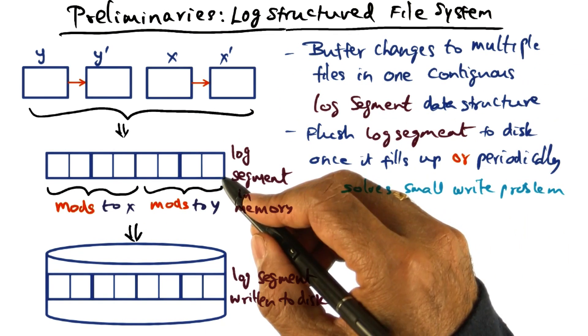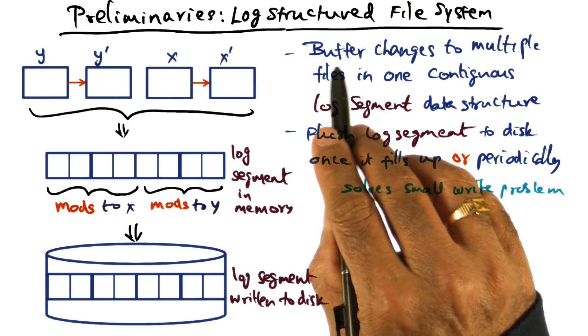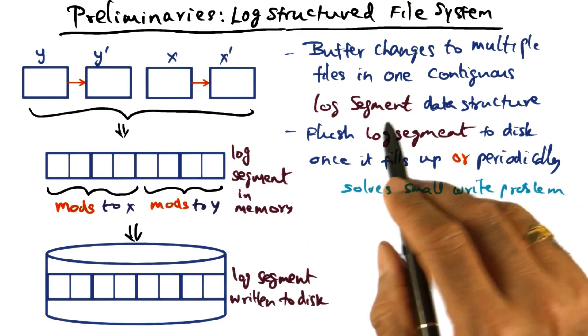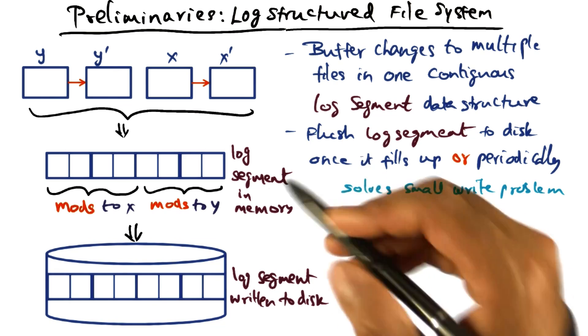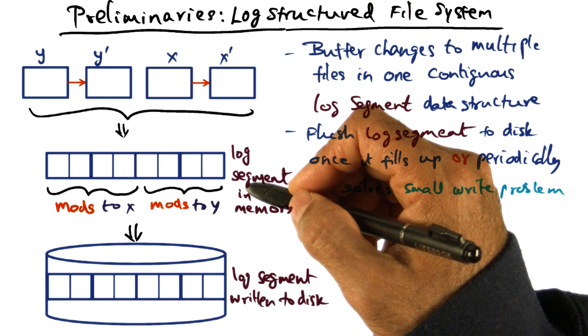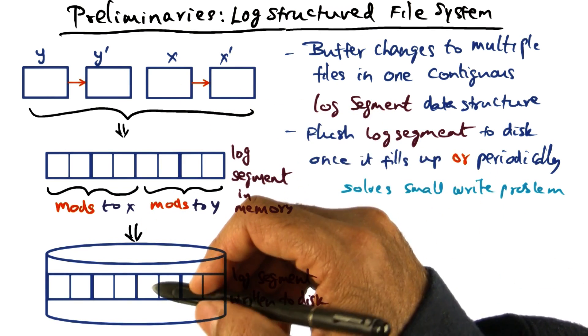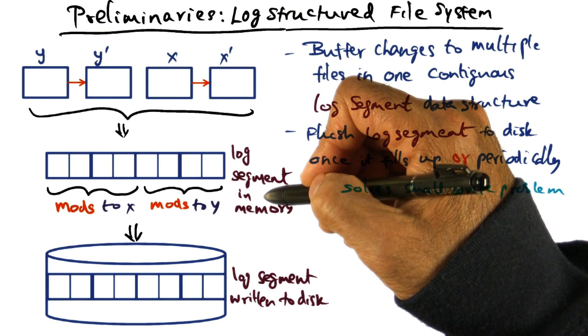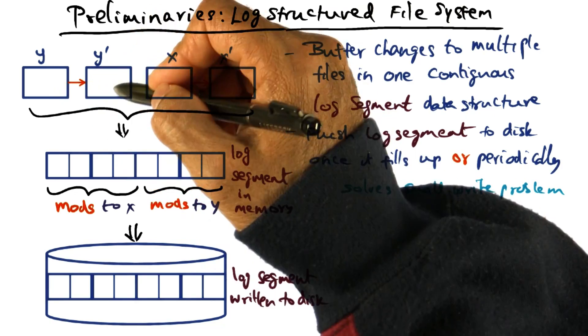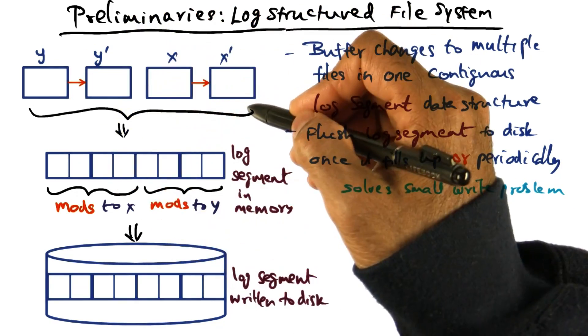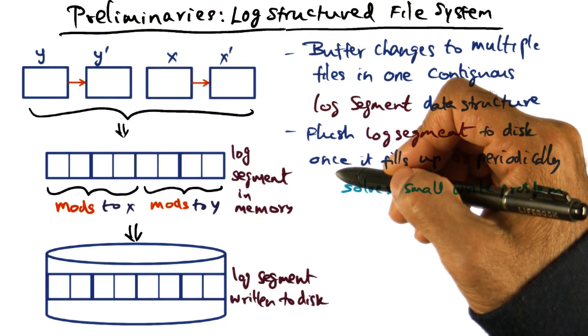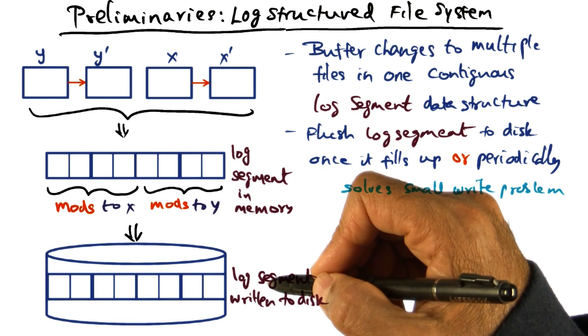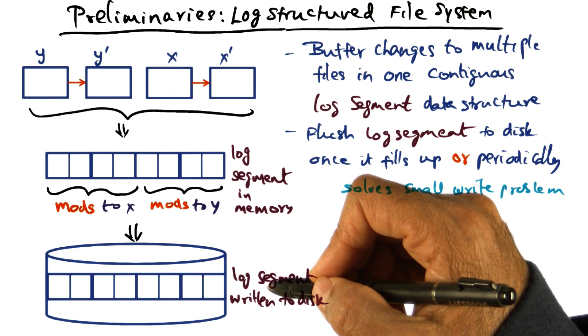So with this log segment data structure, what I can do is buffer the changes to multiple files in one contiguous log segment data structure. So this log segment data structure, I can write it out as a file, and when I write it out, I'm not writing a single file, but I'm actually writing a log segment which contains all the changes made to multiple files. And because the log segment is contiguous, I can write it sequentially on the disk, and sequential writes are good in the disk subsystem.